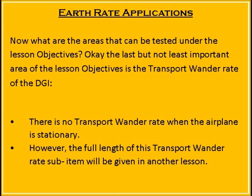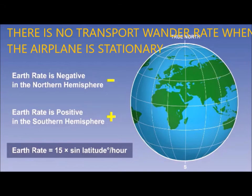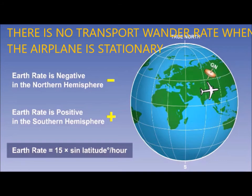The last but not least important area of the lesson objectives is the transport wander rate of the DI. There is no transport wander rate when the airplane is stationary. However, the full treatment of this transport wander rate sub-item will be given in another lesson. Apparent wander due to transport wander occurs at the same time as earth rate. In the case of transport wander, the additional factor is that the gyro itself is moved across the earth. We will look at this in more detail in the companion lesson on drift rate calculations.